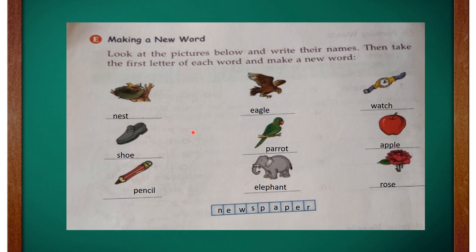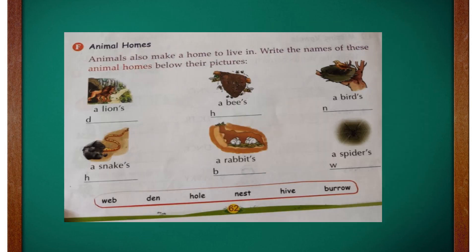Similarly, you can also try to make many words by looking at any pictures around you, and try to complete this exercise on your own as well. We are going to continue the exercise given in page number 62. Children, we all live in our homes — similarly, animals, birds, and even small insects have their own homes.